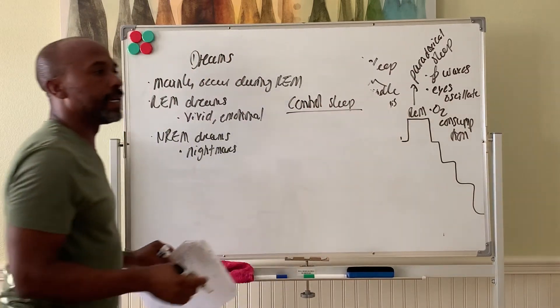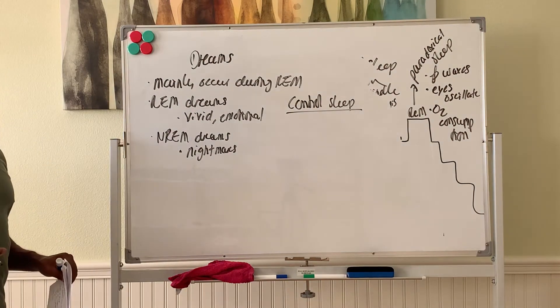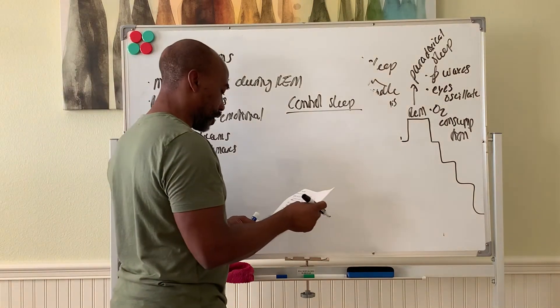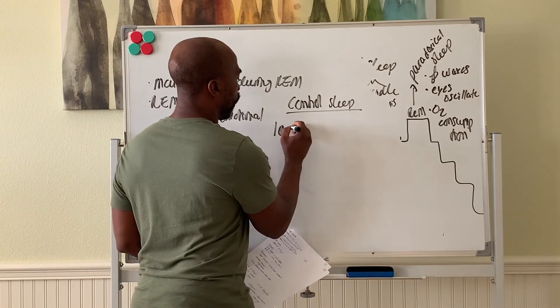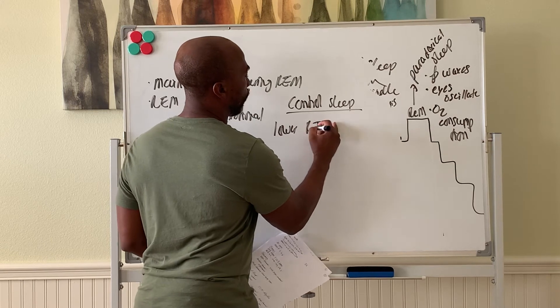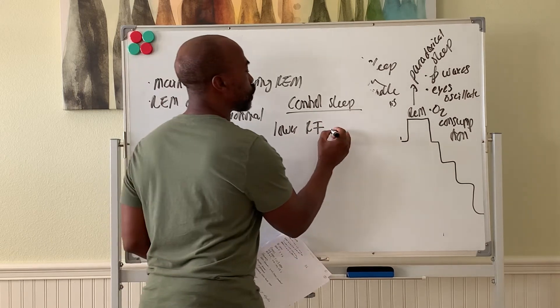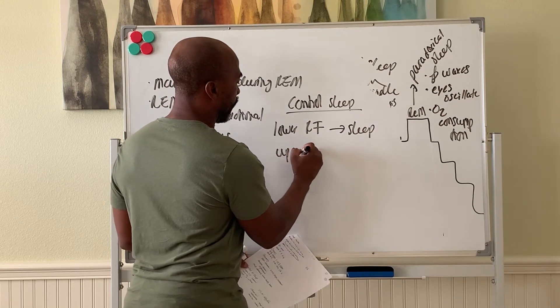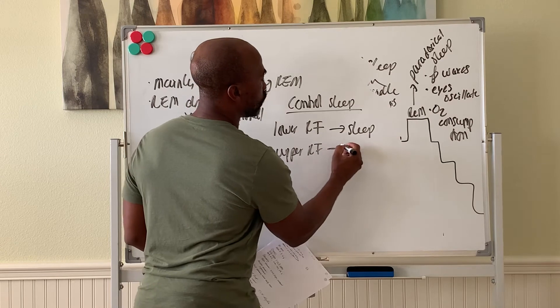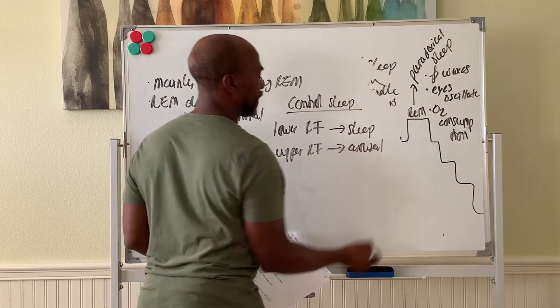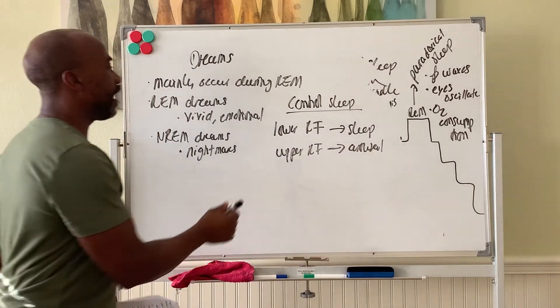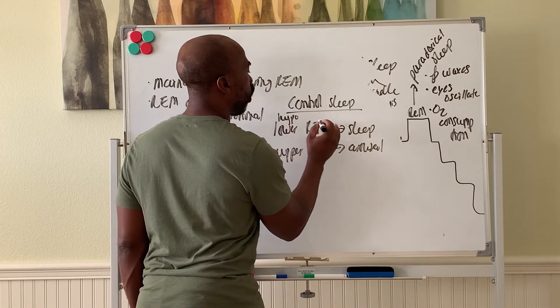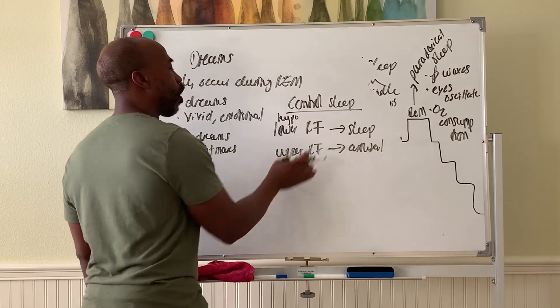Sleep is an active thing. You fall asleep when your brain pushes you into sleep. To sleep, your lower reticular formation, which is an area in the brainstem, will trigger sleep, while your upper reticular formation triggers arousal and wakes you up when it's active. We also have parts of the hypothalamus involved in sleep induction, hypothalamus and lower RF.